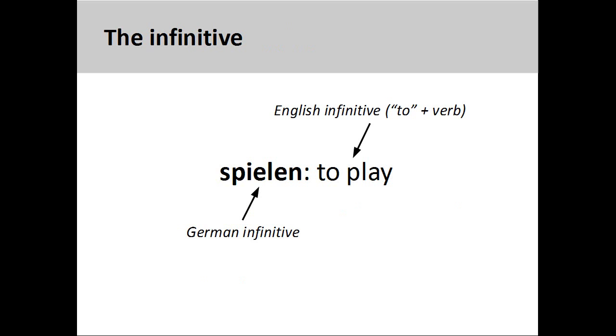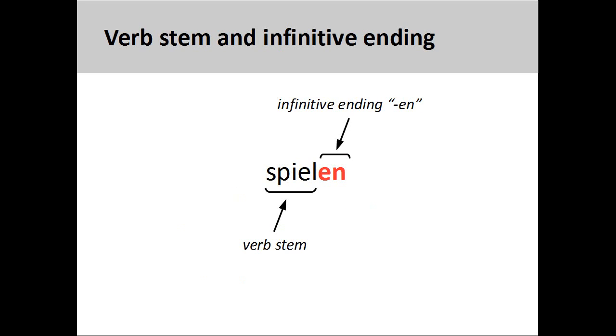To conjugate a verb in German, you begin with the infinitive form of the verb. This is the form that you will find in the dictionary. You will note that English uses 'to' with a verb to form the infinitive, but German does not do this. Instead, German has an infinitive ending which is attached to the verb stem to form the infinitive. Here, the infinitive ending '-en' is attached to the verb stem 'spiel' to produce 'spielen', to play.